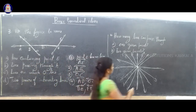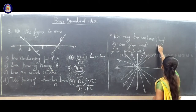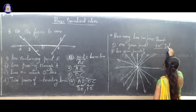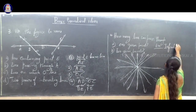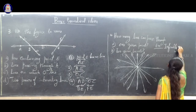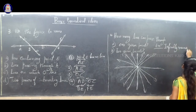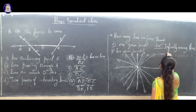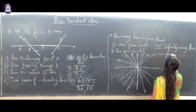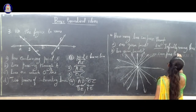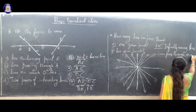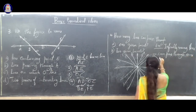Infinitely many lines can pass through one given point. The answer: infinitely many lines can pass through one given point.